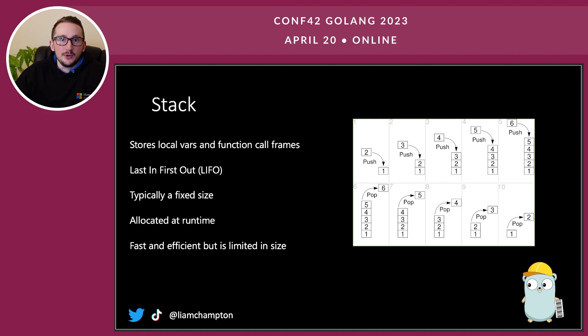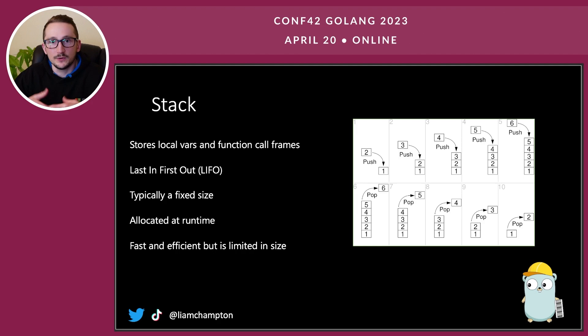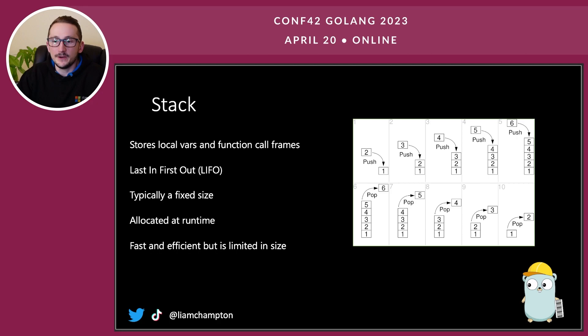If we look at how Go manages the stack, we use something called Go routines. These are another layer of abstraction away from the operating system, which typically deals with threads, but this is something inside the language already. This actually helps with stack allocation — it starts at about two kilobytes of memory. Quite small. So that's really good, really fast, and really efficient.